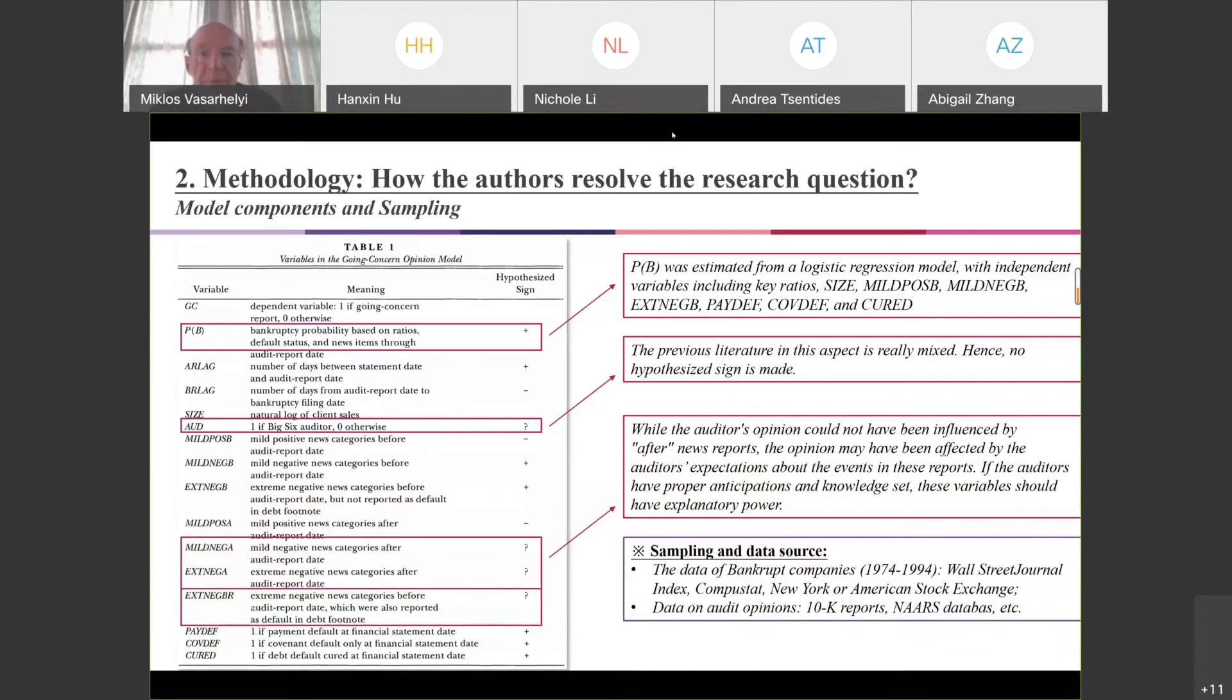Why is this research question important? To my understanding, this paper systematically explores the impacts of multiple contrary and mitigating factors on the issuance of the modified going concern decision. As for the previous literature, they basically explore one or two factors' effects. This paper explores several and multiple factors. They do it in a more systematic and comprehensive way.